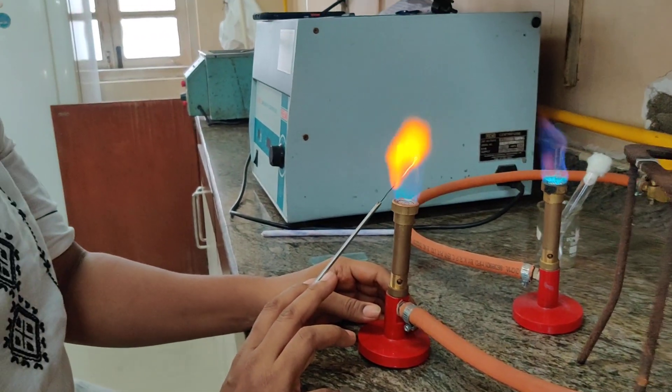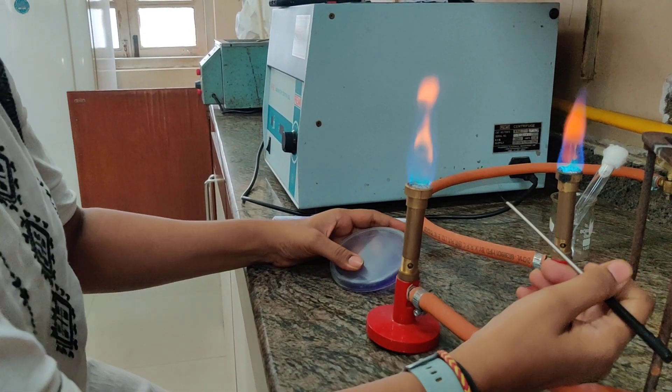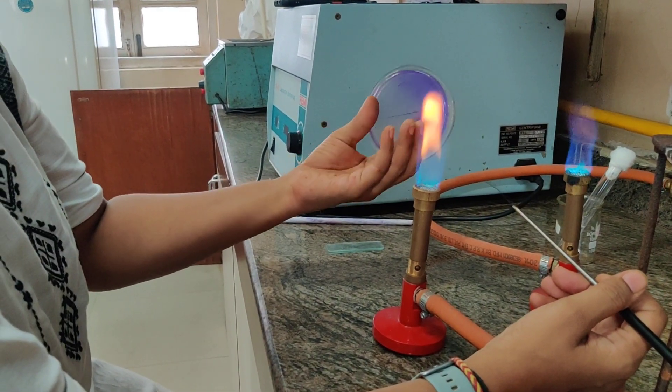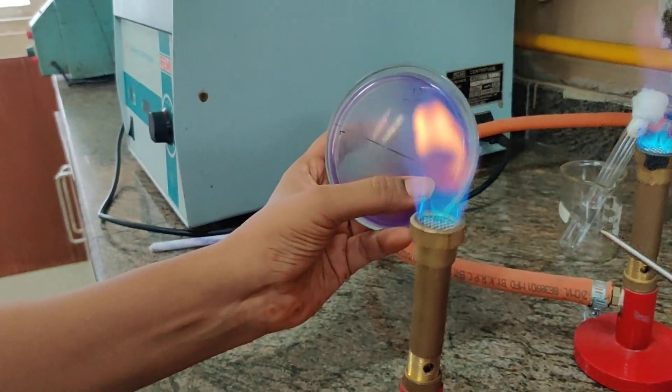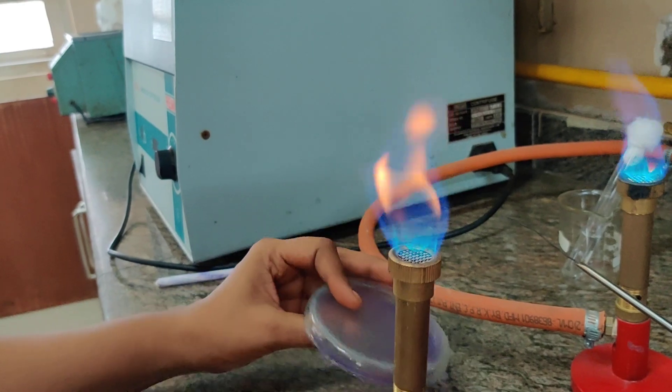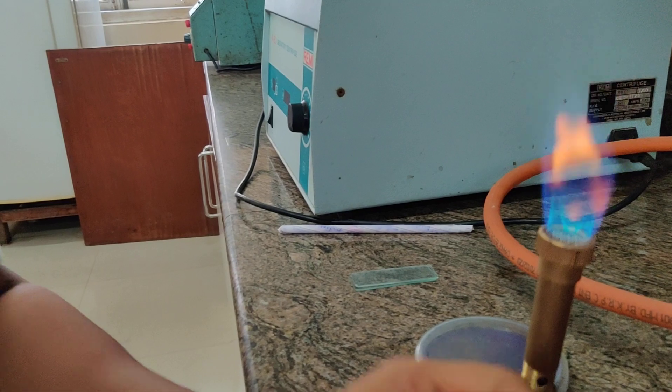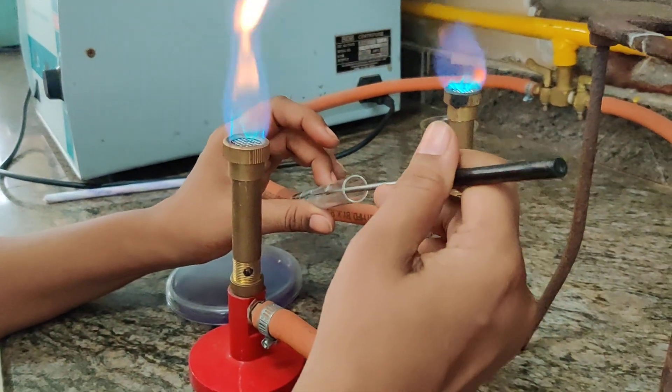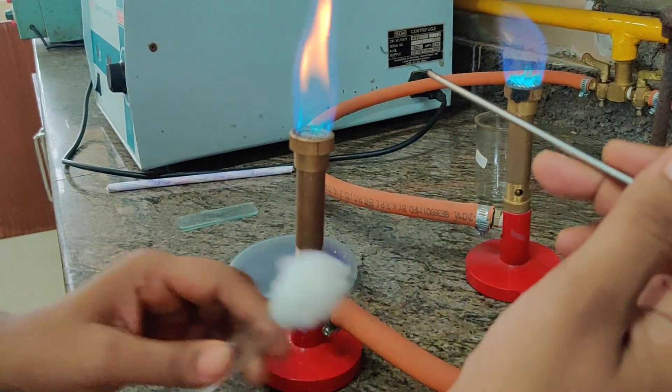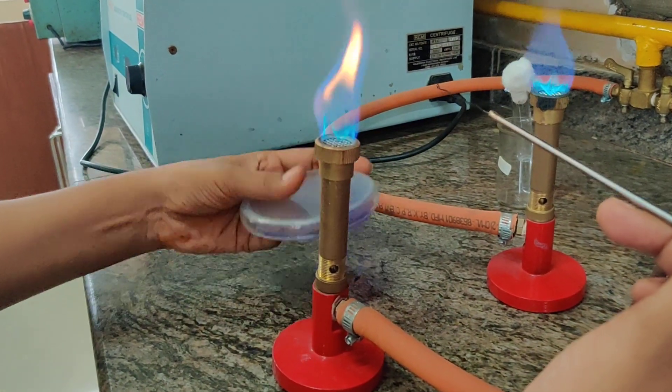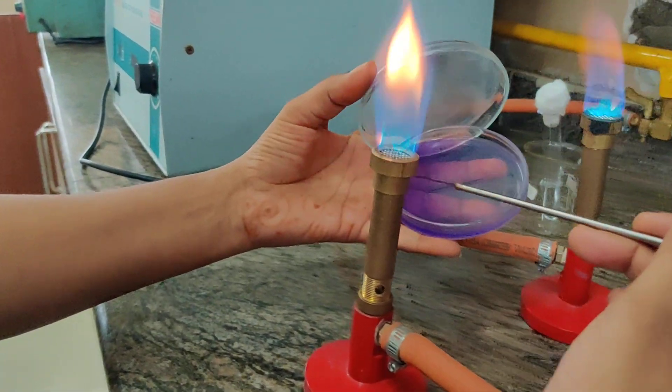We are now going to streak the culture onto the plate. Here our gradient is ready and we have labelled it high and low. The streaking is going to be from the direction from high to low, so we may keep our plate accordingly. We take a loop full of the culture and we will use a single streak from the direction from high to low.